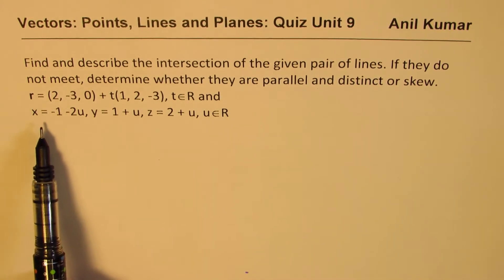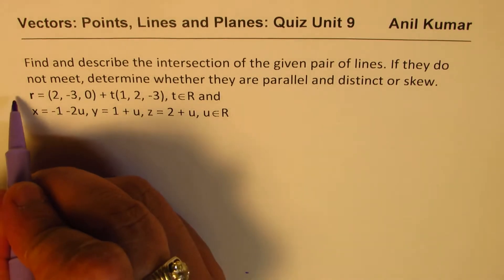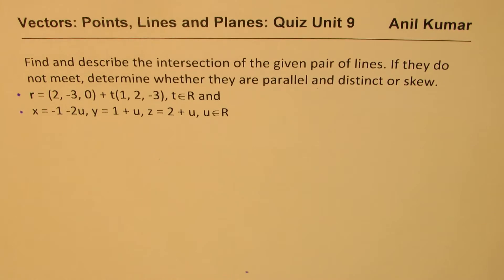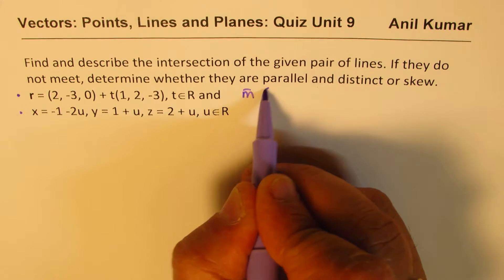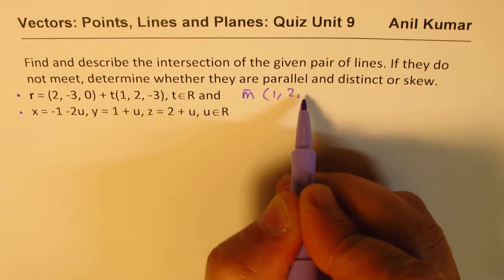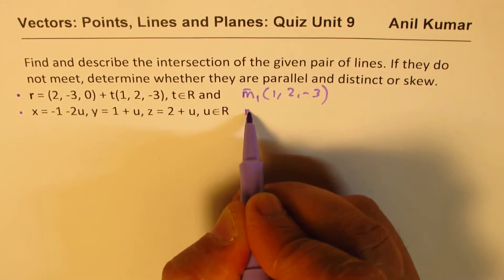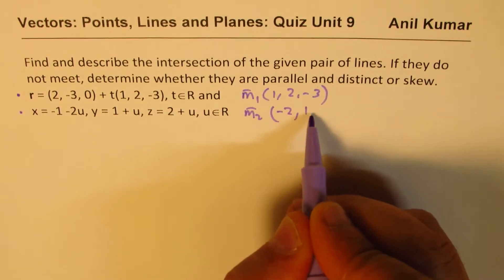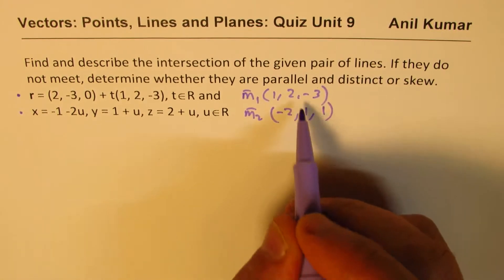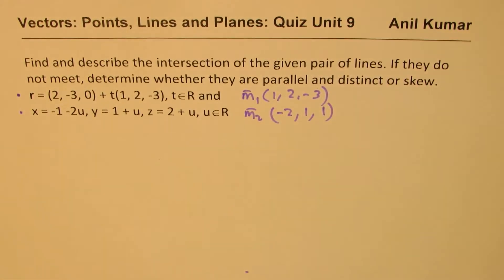So these are the two lines given to you. You can always pause the video, answer the question and then look into my suggestions. Now if you look into these directions, the first one, the direction is (1, 2, -3). The other one, let me call them as M1 and M2, the direction is (-2, 1, 1), right? So that means that their directions are not scalar multiples. So if they are coplanar, they will meet. If they are in parallel planes, then they will not meet. So let's figure out the point of intersection now.